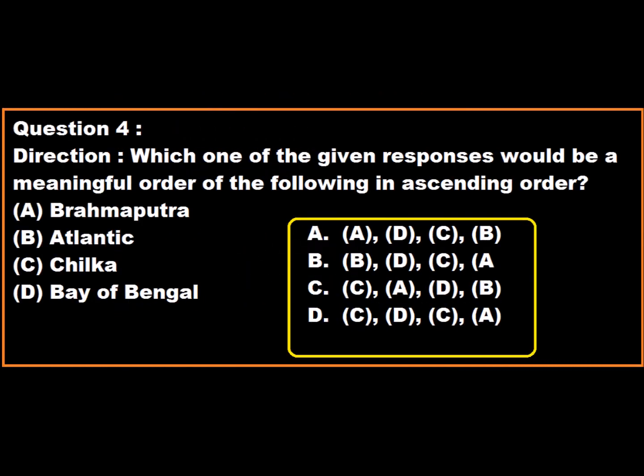Question 4: Which one of the given responses would be a meaningful order of the following in ascending order? A: Brahmaputra, B: Atlantic, C: Chilika, D: Bay of Bengal. Option A: ADCB, Option B: BDCA, Option C: CADB, Option D: CDCA.